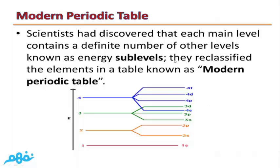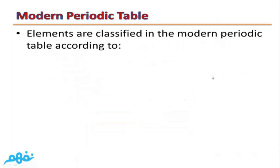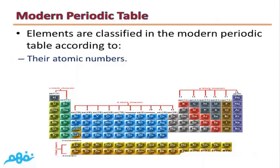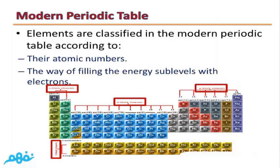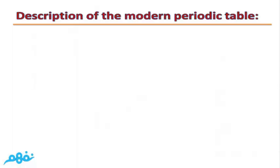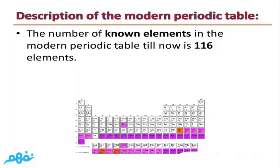Scientists reclassified the elements in a table known as the modern periodic table. Elements are classified according to two factors: the first is their atomic numbers, and the second is the way of filling the energy sub-levels with electrons. We will discover that the modern periodic table is classified into four blocks according to the four energy sub-levels.